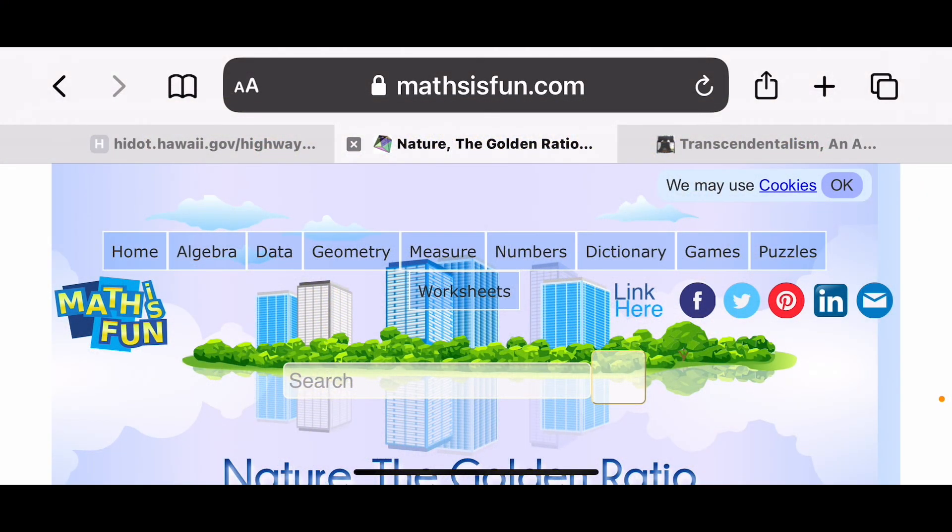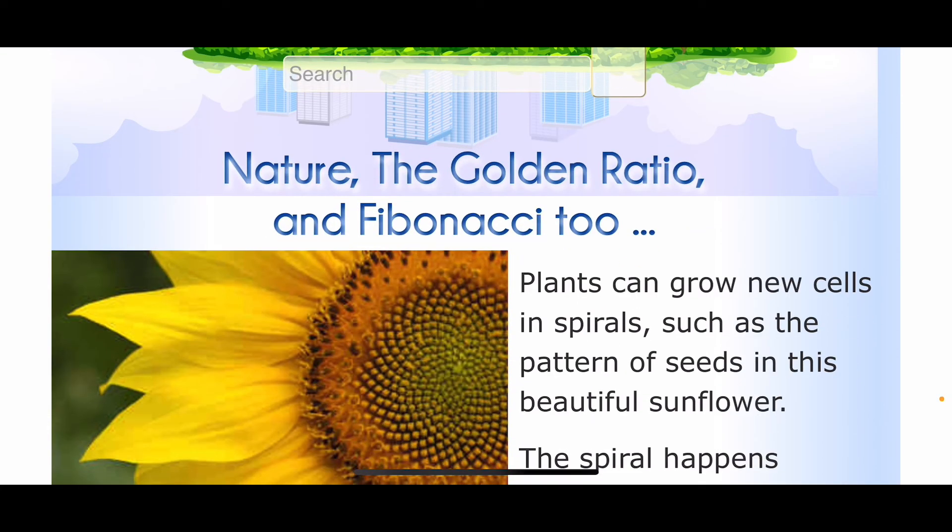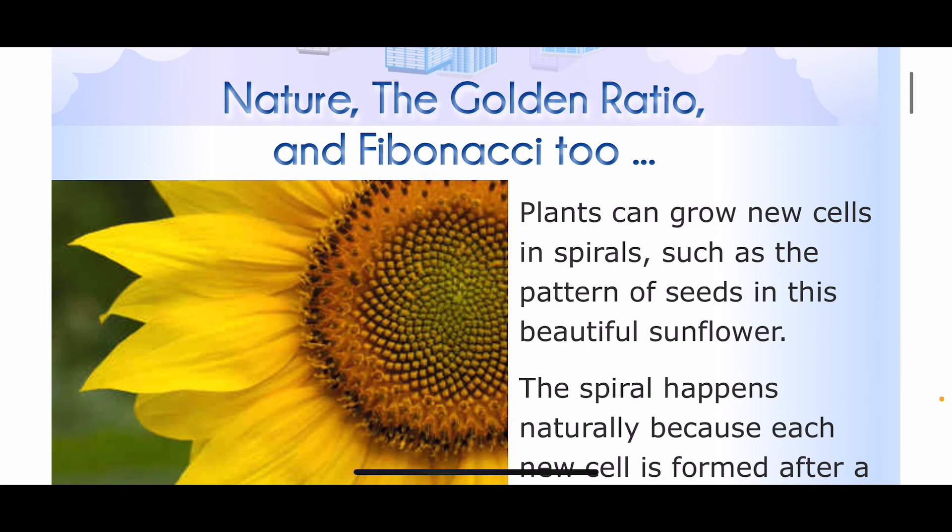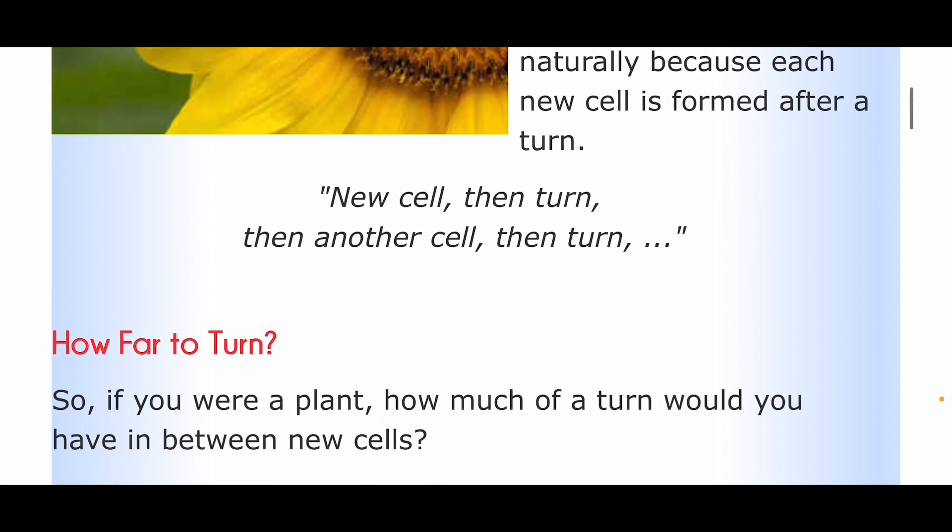Let's take a field trip to mathisfun.com. So the first thing we need to know is how sunflowers make seeds. The seeds are pushed outwards from the center of the flower in a spiraling pattern. And a new seed is made after every turn. The question is, how far should the flower rotate between seeds in order to maximize the number of seeds that fit into a limited amount of space?